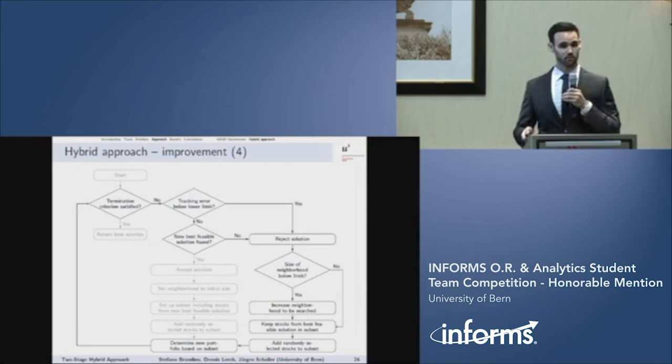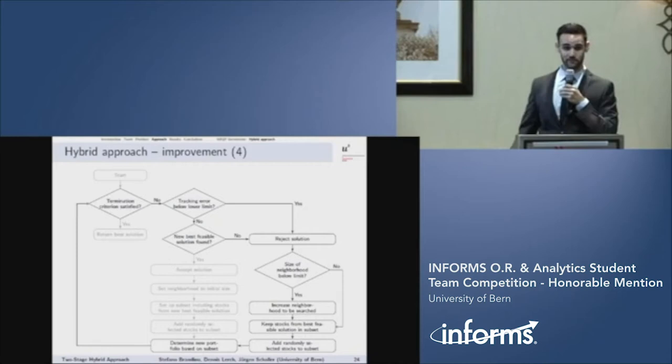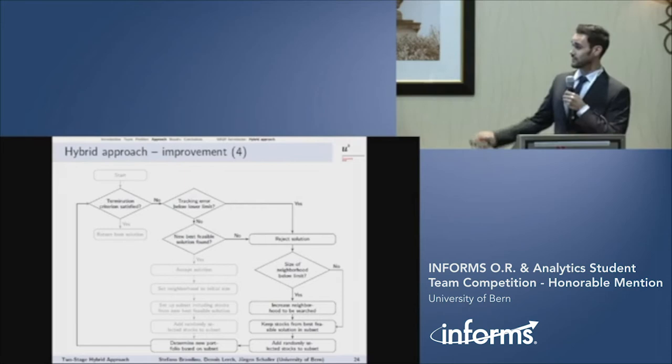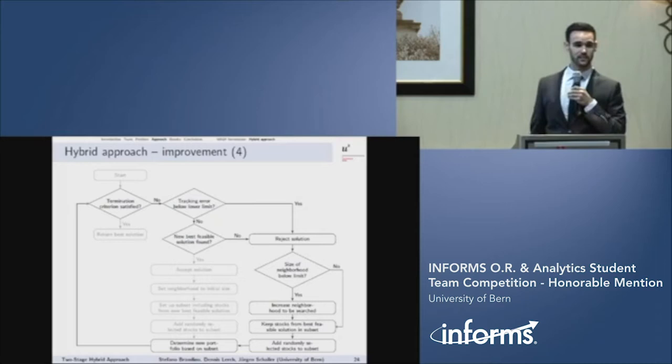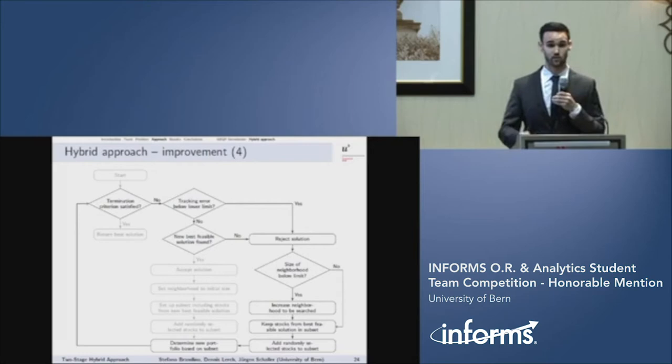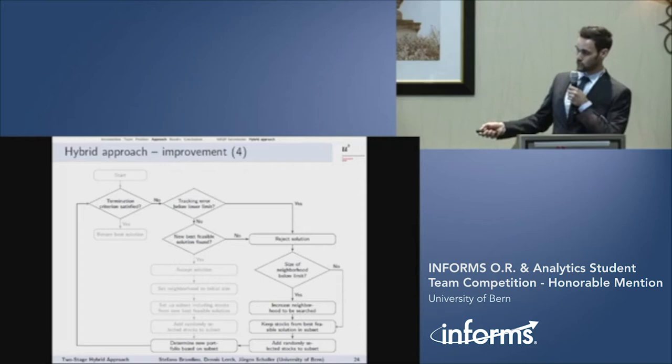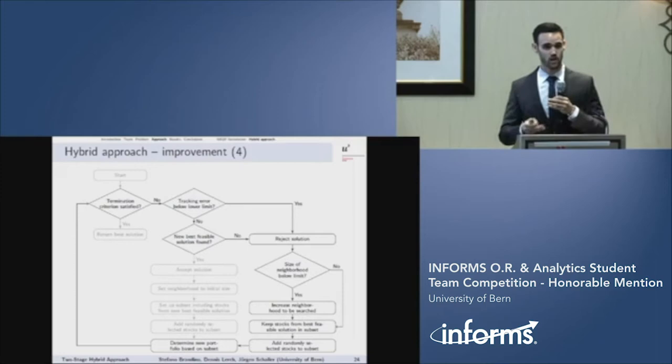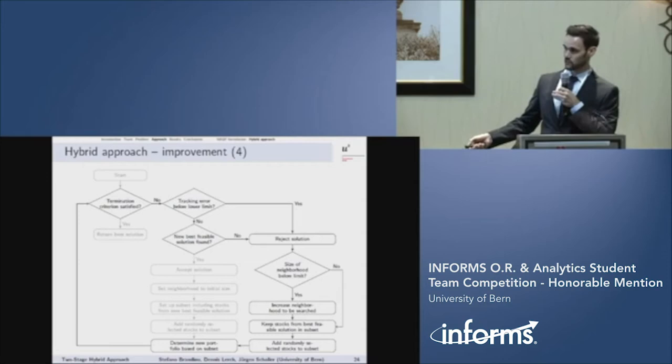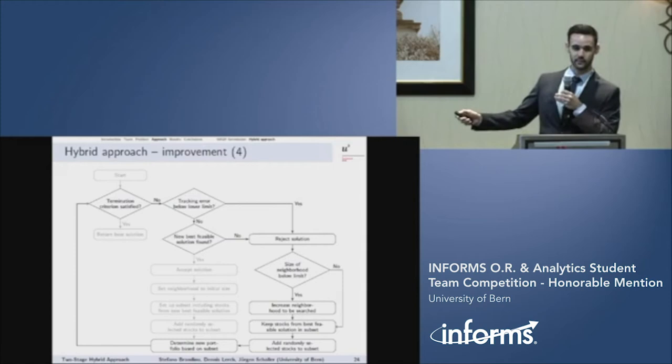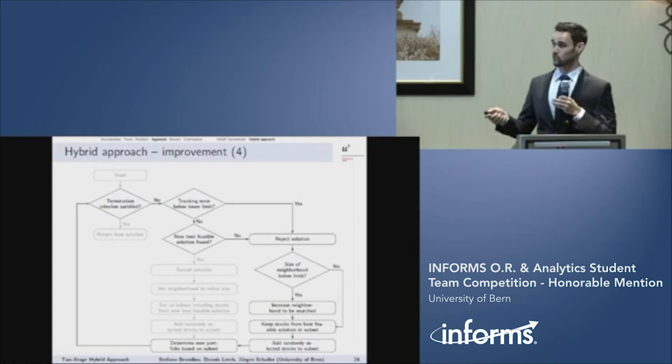Now, in this case, we assume that the resulting portfolio has a tracking error which is below the lower limit or is not better than the reference solution. In that case, the algorithm rejects the solution and then may increase the neighborhood or not depending if a certain limit is already exceeded or not. By increasing the neighborhood size, we give more possibilities to the solver to improve the best feasible solution. What is done next is the subset contains again the stocks from the best feasible solution. However, new randomly selected stocks are added to it. And in the next step, the portfolio is again solved. And the whole process starts again until a termination criterion is satisfied. And in the end, what the algorithm does, it returns the best portfolio we found with the best known trade-off between tracking error and net excess return.